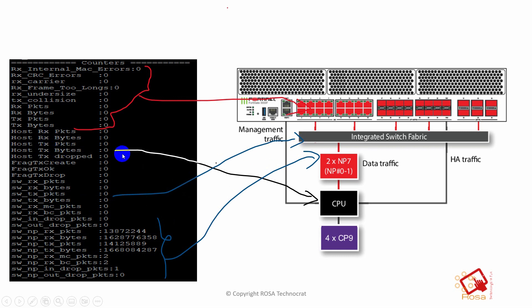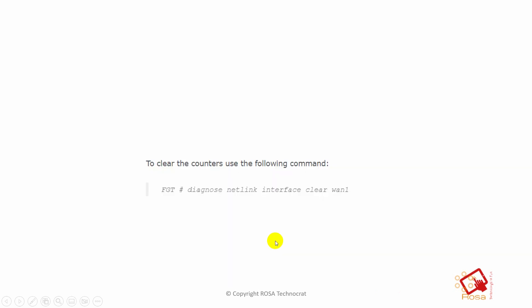Host RX/TX counters represent packets dropped at the CPU level. The NP counters represent drops at the NP level. This command is the primary tool for troubleshooting any drop or interface issues. If you're unsure whether the counters increased recently or existed before, you can clear the counters before starting troubleshooting and then do a fresh check to see if they increase during the issue.